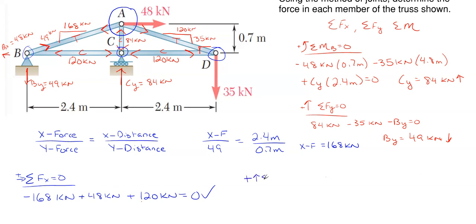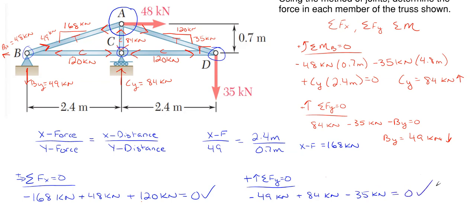Let's double check the vertical direction at joint A to make sure we haven't made any errors. Summing forces in the vertical direction: the 49 kilonewton component of AB has arrow down and to the left so it's going downward — negative 49. The 84 kilonewtons from AC is going upward at joint A — plus 84 kilonewtons. The 35 kilonewtons from AD is going down and to the left — minus 35 kilonewtons. That sums to zero as well. This confirms all forces cancel in equilibrium at the unused joint, giving confidence that all numbers and arrow directions are correct. That's how you solve this truss using the method of joints.